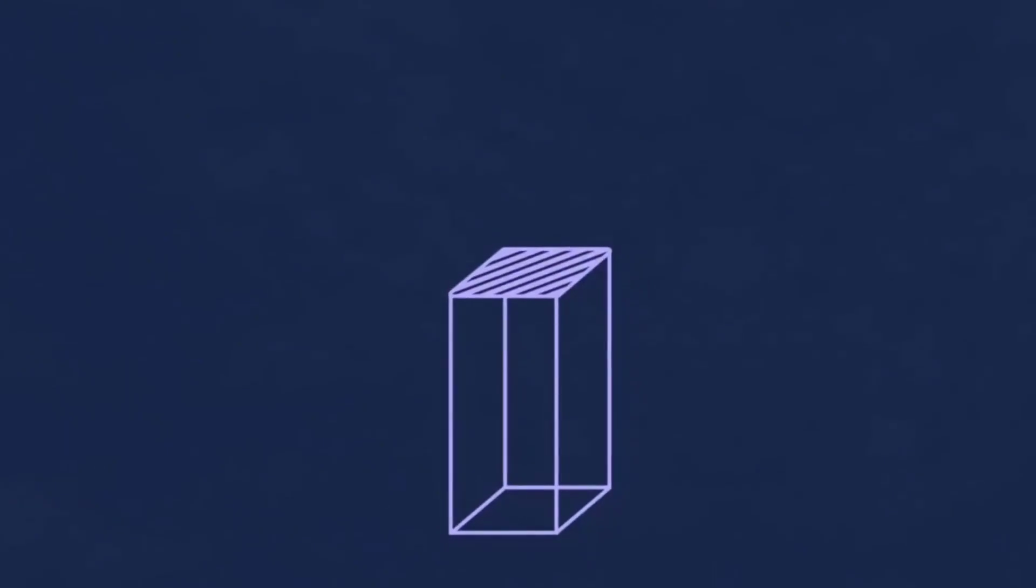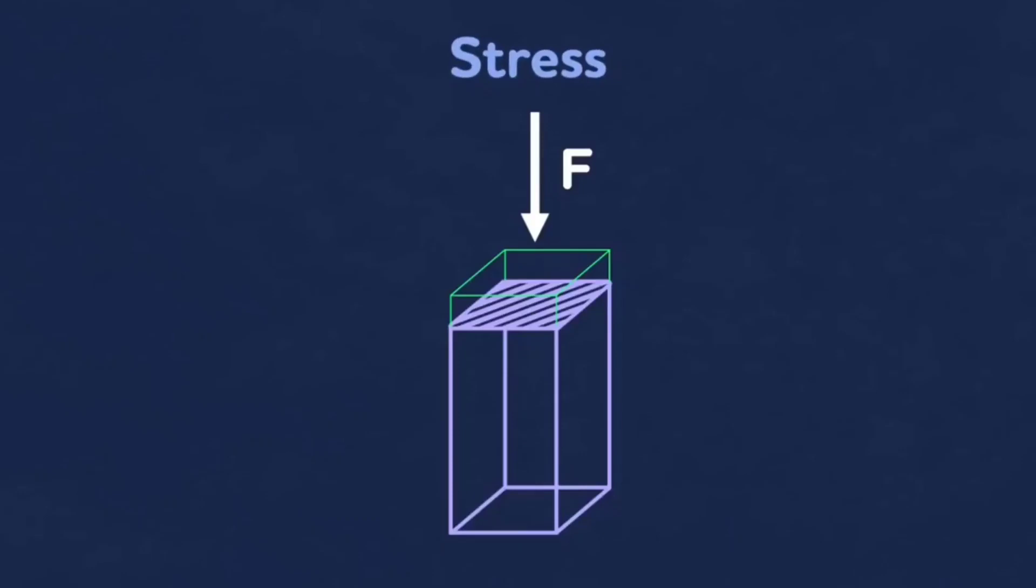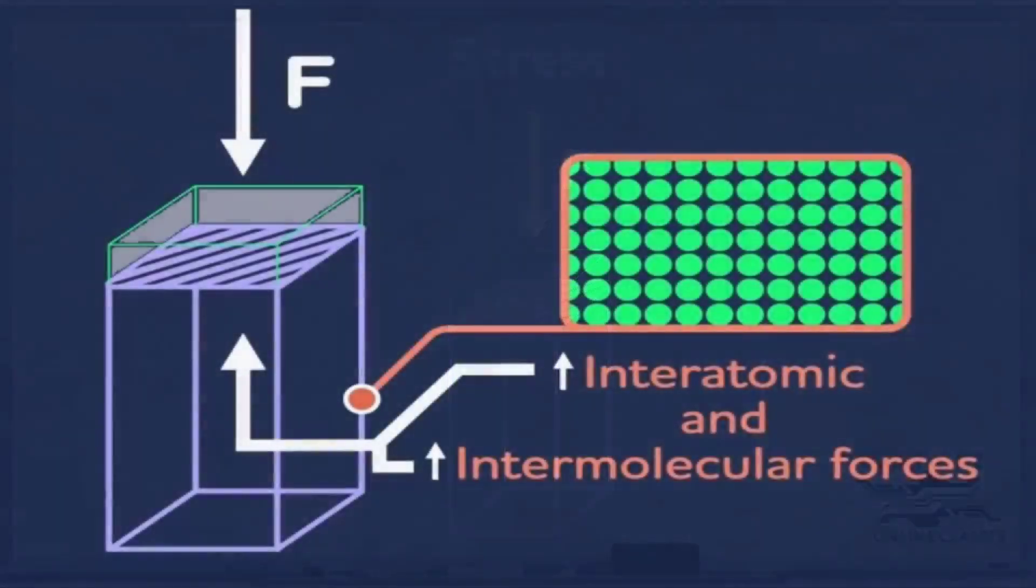Consider a rectangular beam. If you apply a downward force across the surface area of the beam, the type of force applied is compressive. Thus, the beam will experience some stress. The atoms inside the beam will become very close and this results in interatomic and intermolecular forces, which is equal and opposite to the applied force.